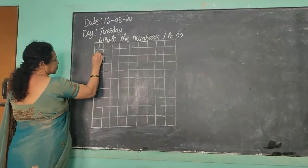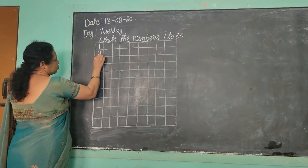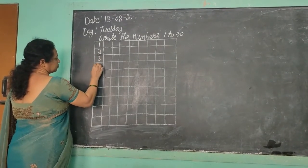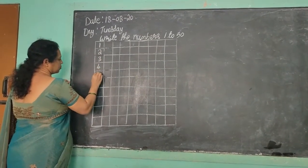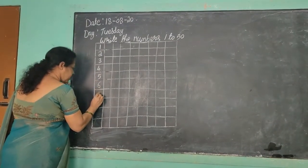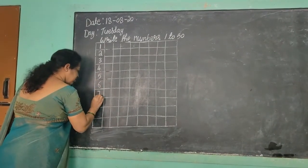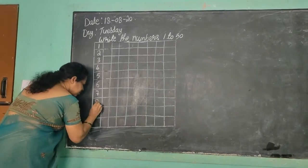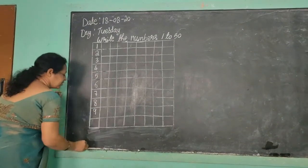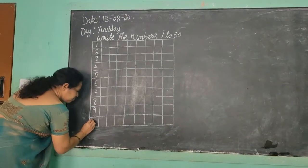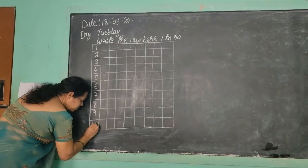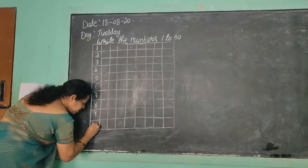1, 2, 3, 4, 5, 6, 7, 8, 9. Then comes 10. How are we going to write 10? 1, 0 is 10.